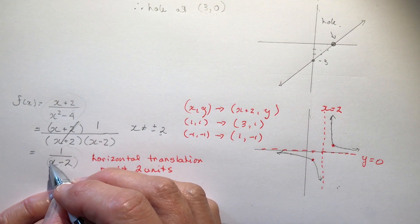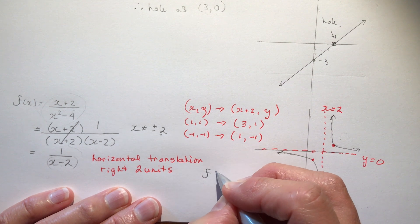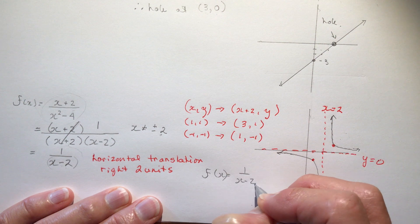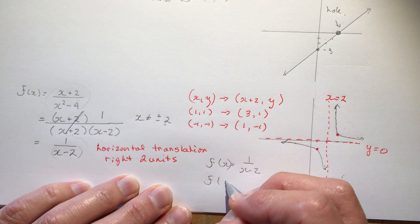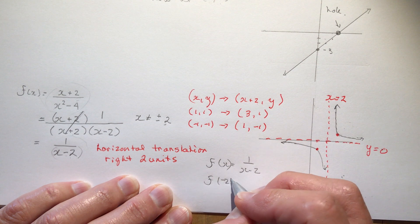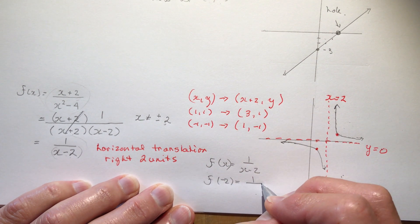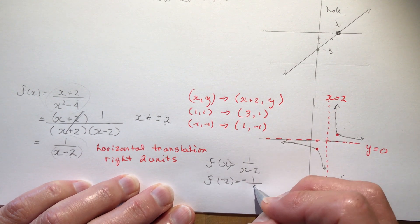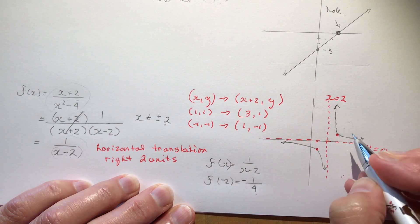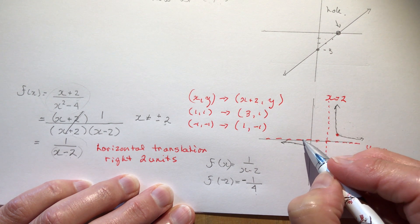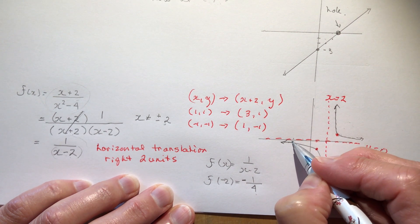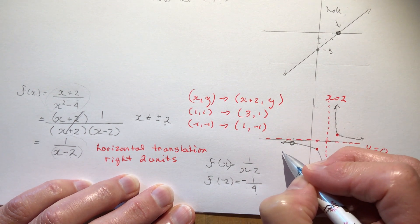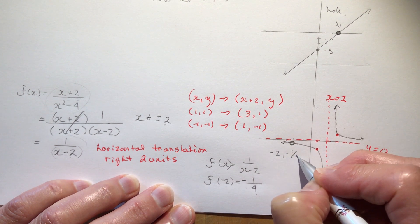I will plug that into this equation here. So f, if f(x) equals 1 over (x - 2), f(-2) is going to be equal to 1 over (-2 minus 2 is -4), you can put the minus sign anywhere you want of course. So at minus 2, so this was minus 1, minus 2 right here, there is a hole in the graph and the coordinates of it are (-2, -1/4).